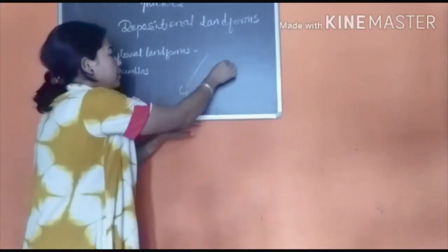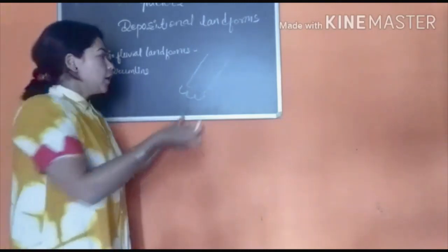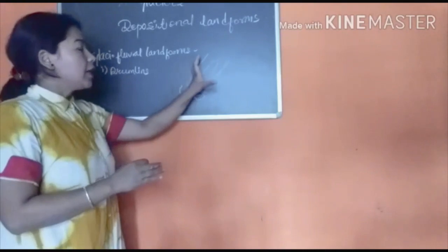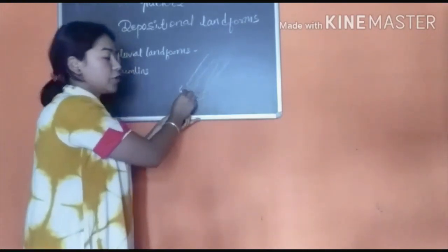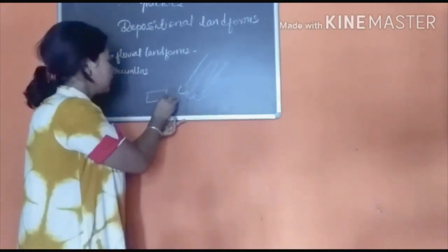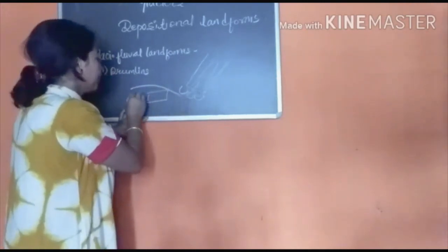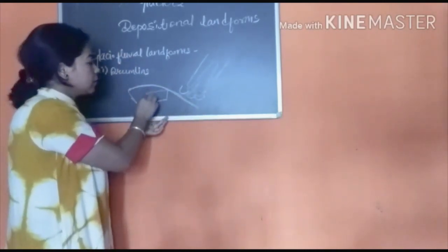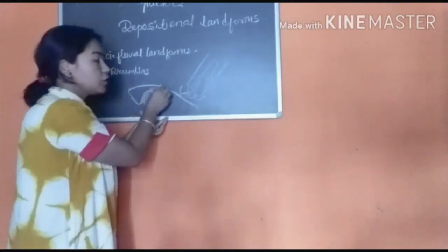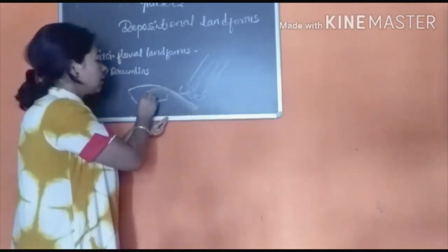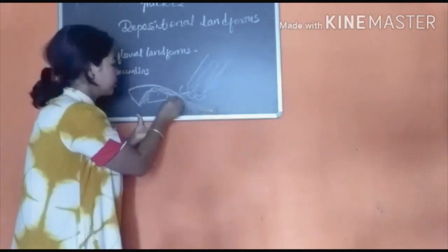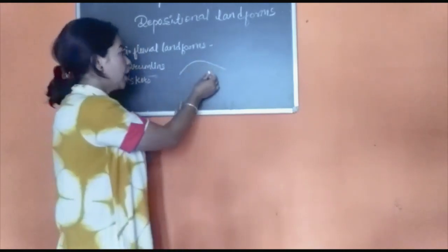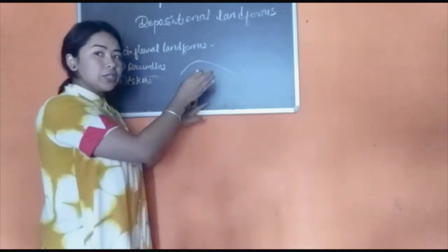If due to any reason the flow of ice increases, then the ice will again pass through this terminal moraine. As it passes through, it erodes the sides and does the work of deposition at the front, giving the terminal moraine an elongated form. Drumlins are steeper at the onset side — the side from which the glaciers are coming — and they taper off, becoming gentle at the side towards which the glaciers move.